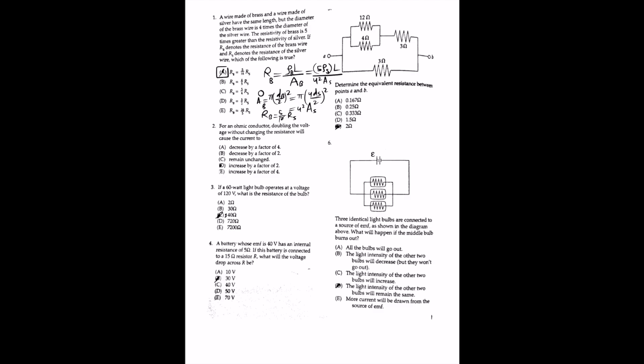For the second question, for an ohmic conductor, doubling the voltage without changing the resistance will cause the current to double as well. Using Ohm's law, I = V/R, increasing the voltage by a factor of two also increases the current by a factor of two because they are directly proportional. The answer is D.